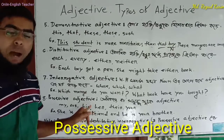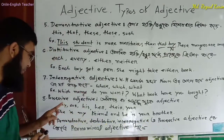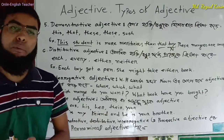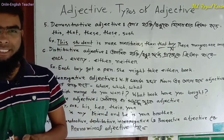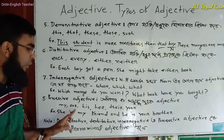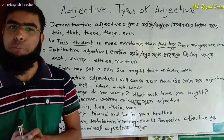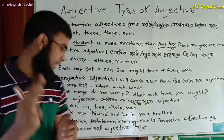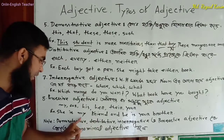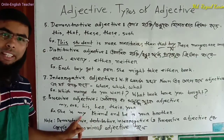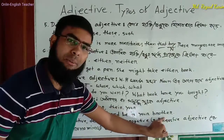Next is possessive adjective — examples include: my, our, his, her, their, your. For example: He is my friend — 'my' is a possessive adjective qualifying the noun 'friend.' He is your brother — 'your' is a possessive adjective qualifying the noun 'brother.'